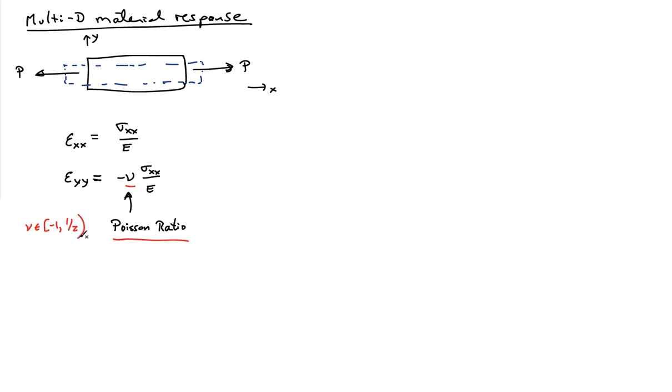So it can never actually get to 1 half. And it's pretty rare to see negative values, but there are some materials that have negative values. So a negative value would mean that when I pulled on this bar of material in the X direction, instead of contracting in the Y direction, it would have actually expanded in the Y direction. So it's not too common, but it can happen for some specially engineered materials.